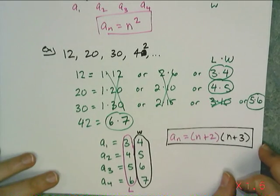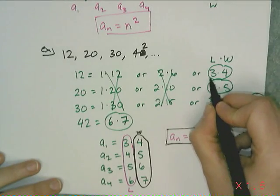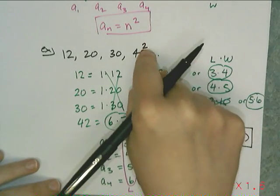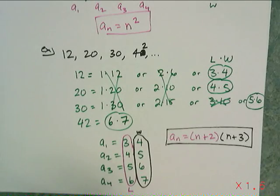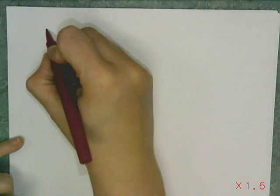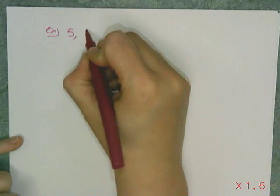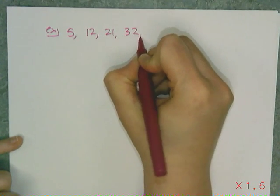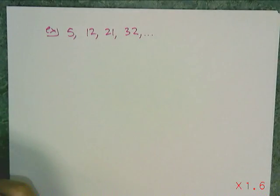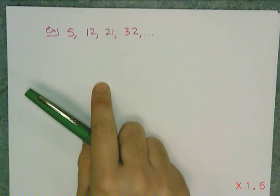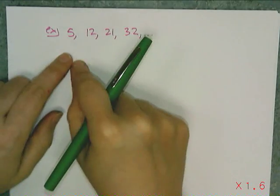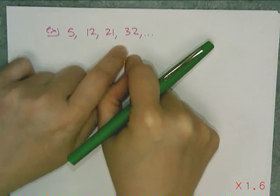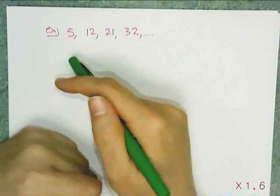So I'm going to do another example. Let's look at the sequence 5, 12, 21, and 32. I need to verify that it's quadratic first, because if it's arithmetic or geometric then the apparent formula is so much easier. I add 7, 9, 11 — I'm adding odd numbers, so therefore it is quadratic.